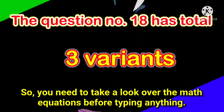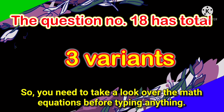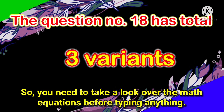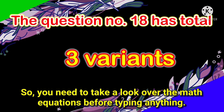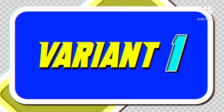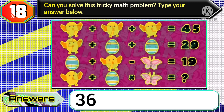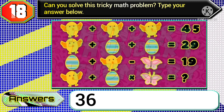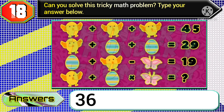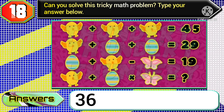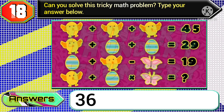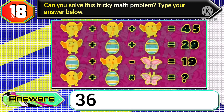Question number 18 has total three variants, so you need to take a look over the math equations before typing anything. In variant one, just see the first equation: if you get the total amount of 3 chickens equals 45, then you need to type the answer 36.